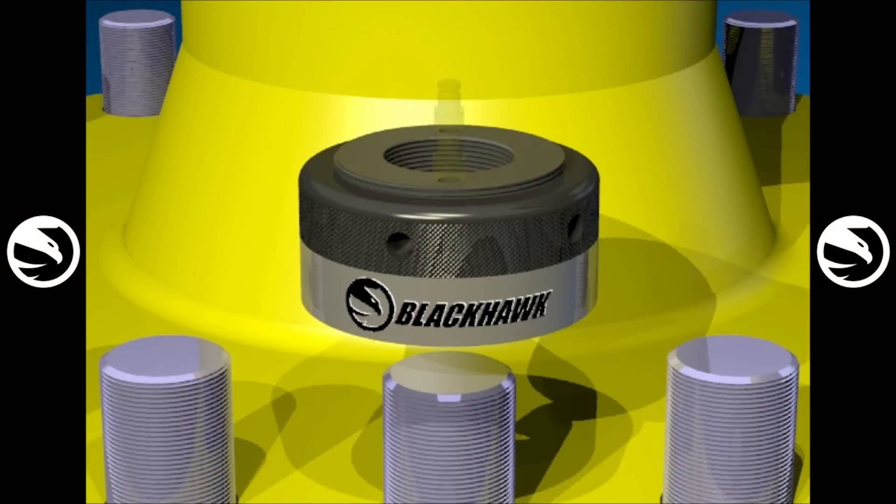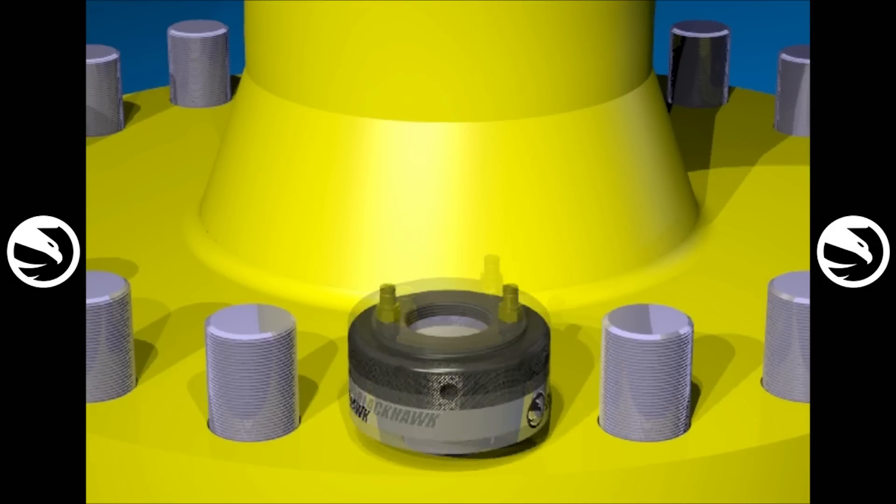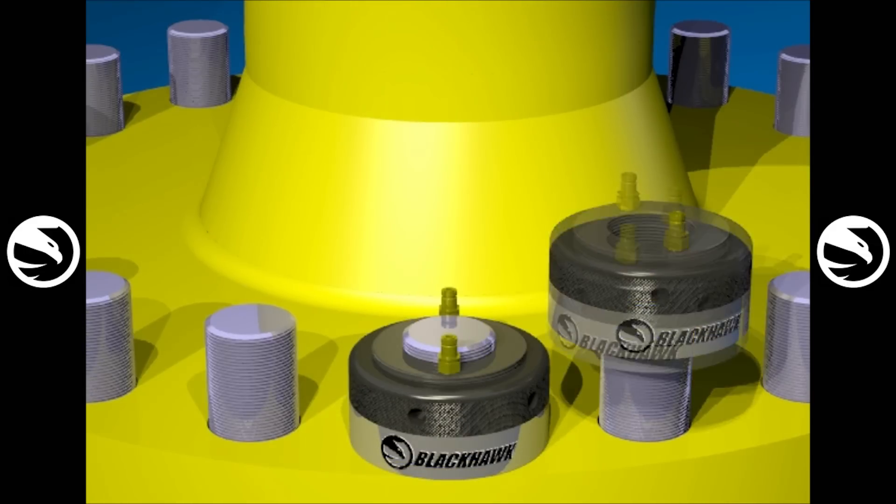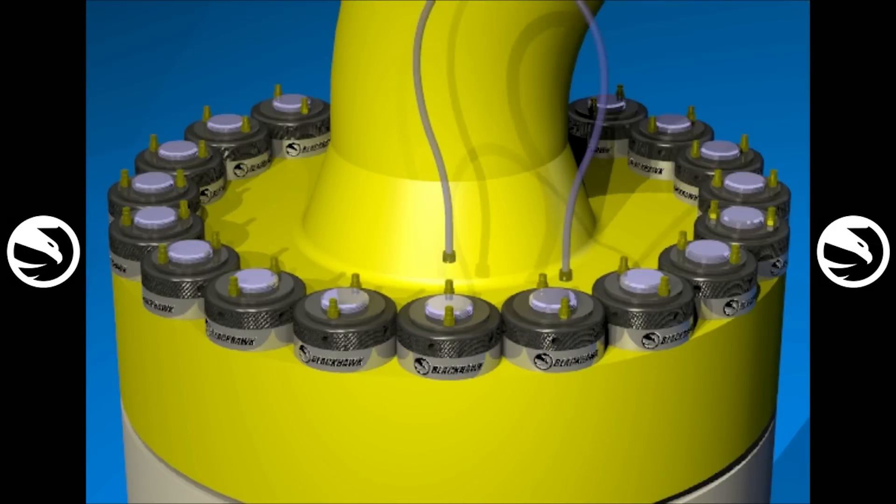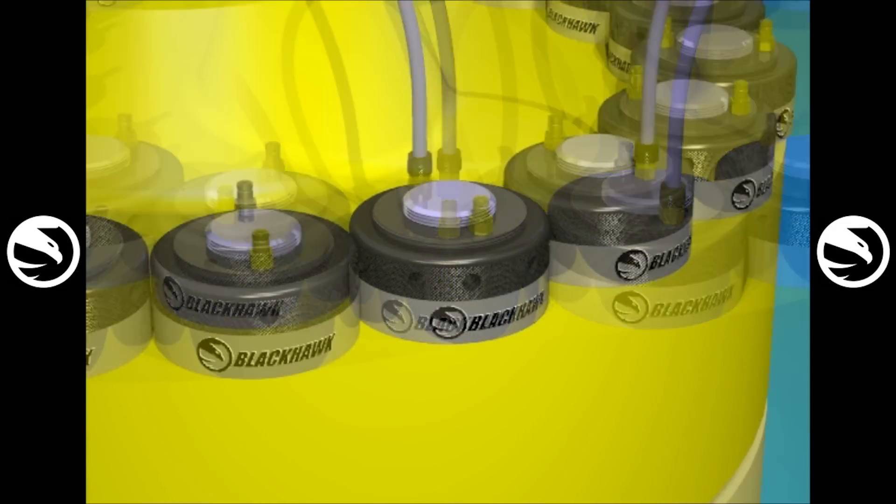To start, Blackhawk nuts are installed on existing studs in place of the standard hex nut. Quick connect hydraulic hoses are attached in series to each Blackhawk nut and then connected to a single hydraulic pump.